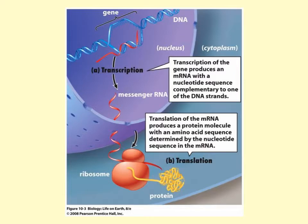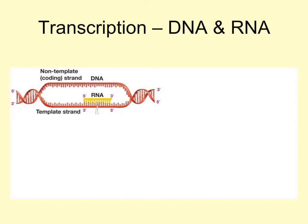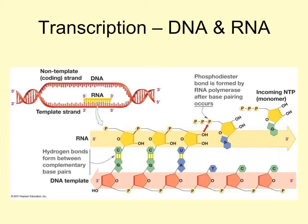Here is a general diagram of protein synthesis. During transcription, the nucleotide sequence in a gene specifies the nucleotide sequence in an RNA molecule. For protein-encoding genes, the product is a messenger RNA molecule that exits the nucleus and enters the cytoplasm. During translation, the sequence in the messenger RNA specifies the amino acid sequence in a protein. One of the DNA strands is the template strand, as it contains the code for the gene; the other strand, containing complementary bases, is called the non-template strand. RNA polymerase adds NTPs in a 5' to 3' direction based on the template strand.